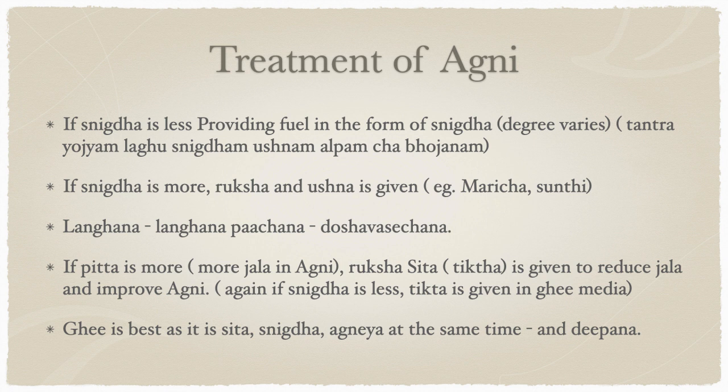If langana alone is not working, we do langana-pachana — give shunti, which improves agni and digests ama by reducing vikrita snigtha. If the condition is too much and langana-pachana doesn't help, we have to forcefully take out the excessive snigtha. So if pitta is more, with more jala in agni, ruksha-shita is given to reduce jala and improve agni. If snigtha is less, tikta rasa should be given in a ghee medium.